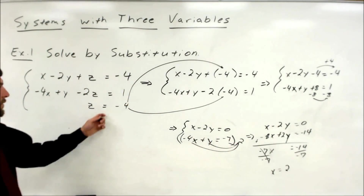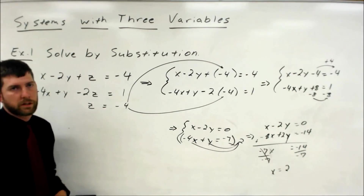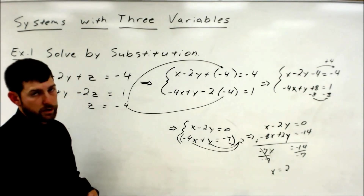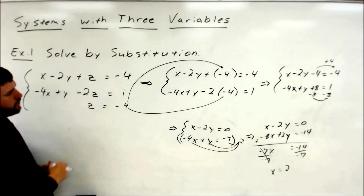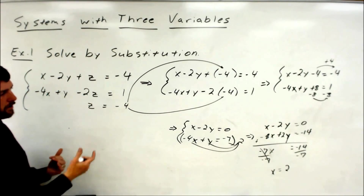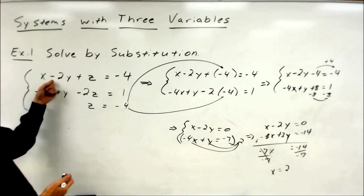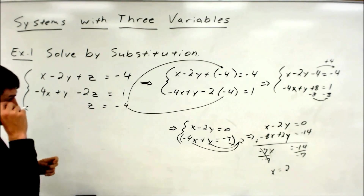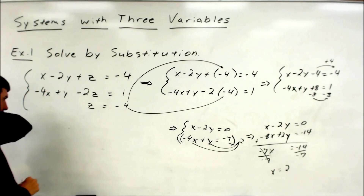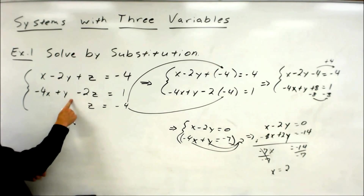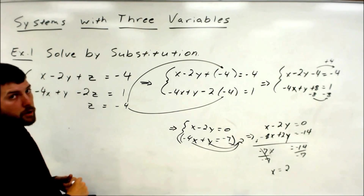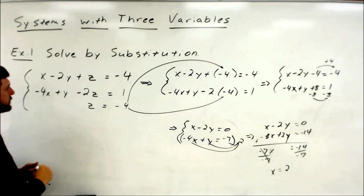So we've got x equals 2 and z equals negative 4. You finish the process by substituting again. Pick either of your remaining equations and plug in your x and your z. I'm going to go to the first equation — it's got smaller numbers. Or we could use the second equation because y already has a coefficient of 1. It's your personal preference.